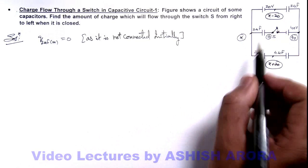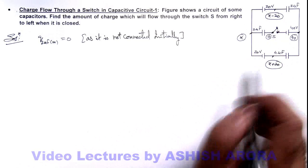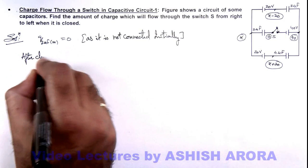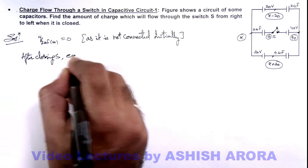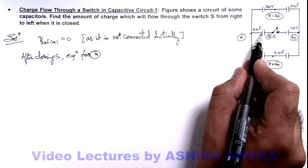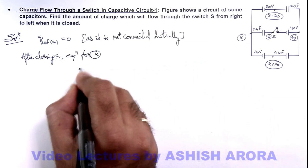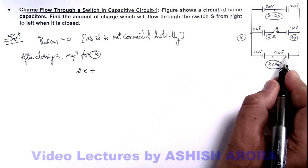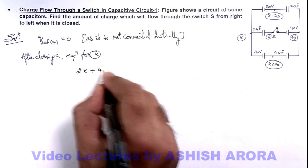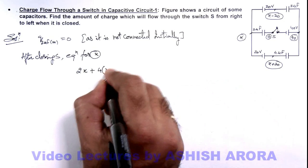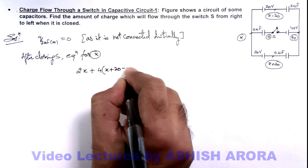Now we can find out the value of x by writing its equation. So here we can write after closing S, equation for x: the charge on this plate of capacitor will be 2 multiplied by x minus zero, plus charge on this plate will be 4 multiplied by this x plus 20, and this is 40, so this will be x plus 20 minus 40.